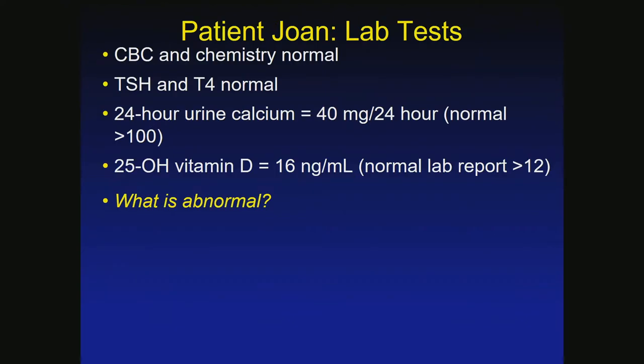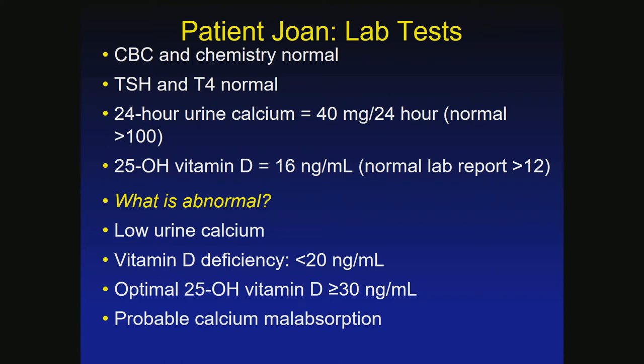Back to Joan. Her CBC and chemistry are normal. TSH and T4 are normal. Her 24-hour urinary calcium is 40, and the 25-hydroxyvitamin D is 16. What is going on? She has low 24-hour urinary calcium and low vitamin D — so she could have malabsorption explaining both. The probable diagnosis is malabsorption, and the most common cause would be celiac disease.